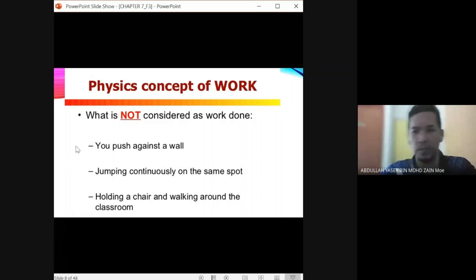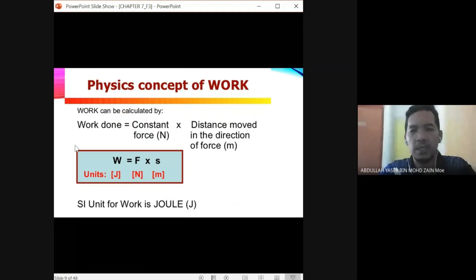How to calculate work done? Work done can be calculated by: work done equals constant force times distance moved in the direction of force. The short form is W equals F times S. Distance is in meters and force in newtons. The SI unit for work is joule, and the symbol is J. Let's see the example of work done.